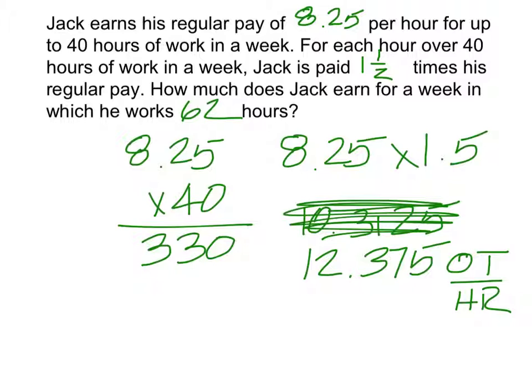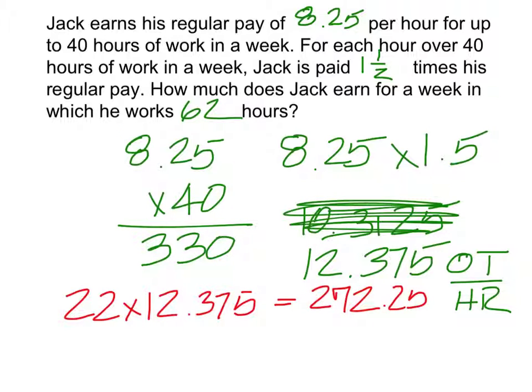Alright, so, what do we do with it? Times by 22. What's 22? The number of extra hours he worked at 3.40. Right. So, we're going to go 22 times 12.375. What did you get? 272.25. Now, what do we do? Add that to 330. Yes, add that to 330. And, what do we come up with? 602.25. $602.25 is what he makes for that week.